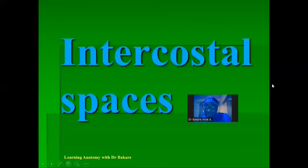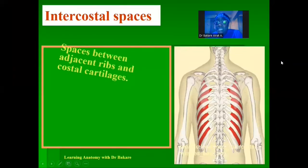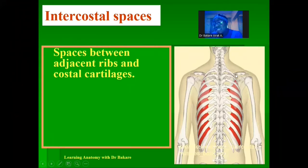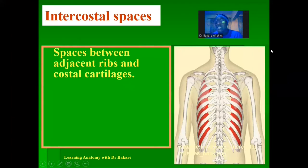Welcome. Let's look at the intercostal spaces. These are spaces seen between adjacent ribs and costal cartilages. The ribs span from the vertebral column posteriorly to the sternum anteriorly, and the spaces between adjacent ribs and costal cartilages are referred to as the intercostal spaces. This is the intercostal space, arrowed in red.